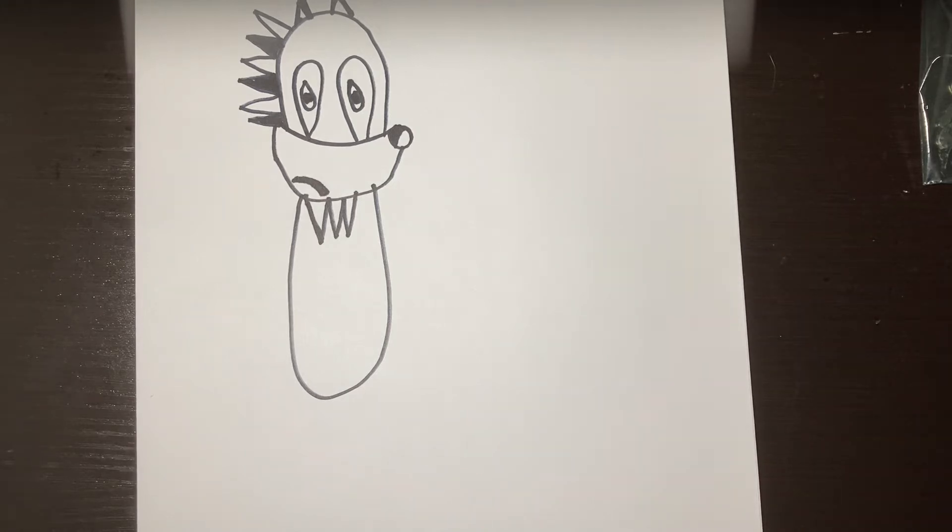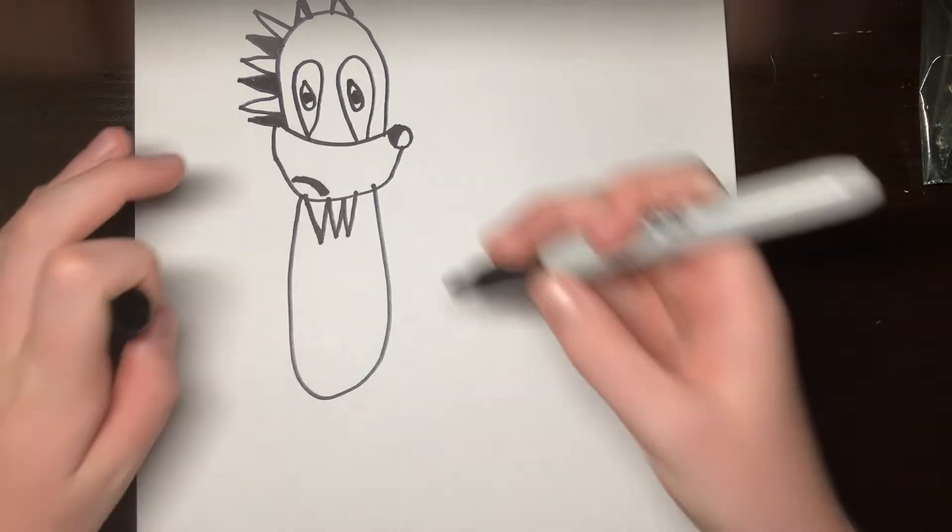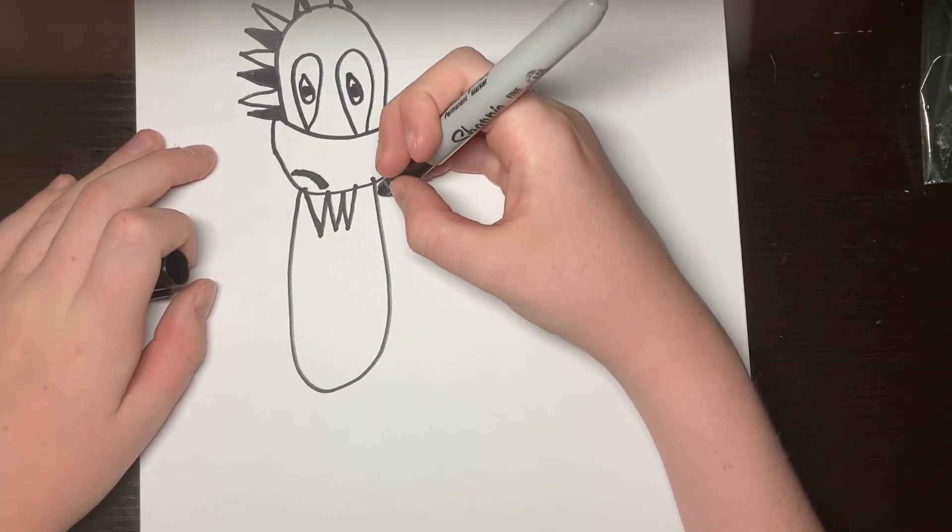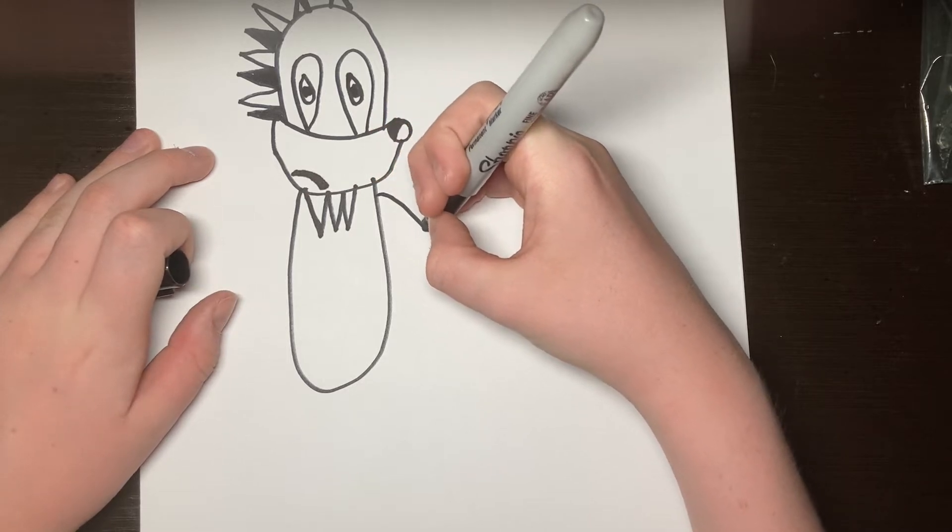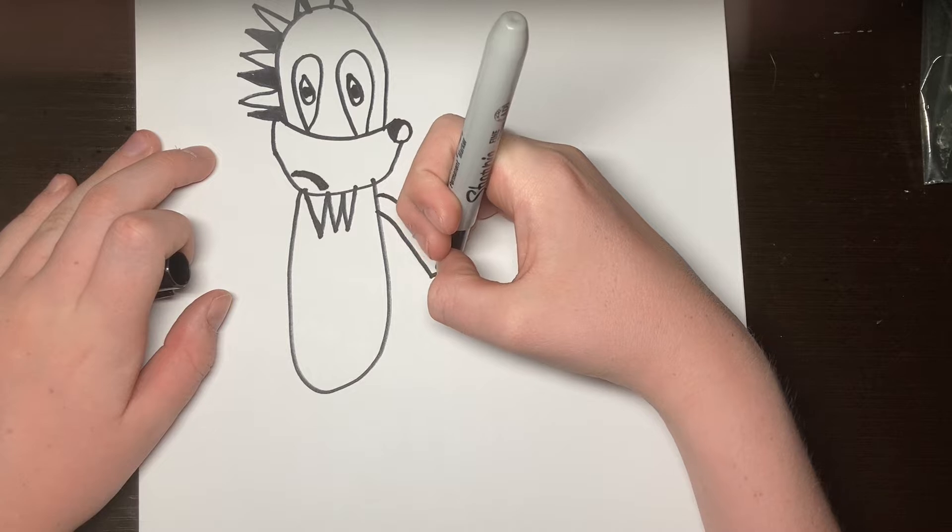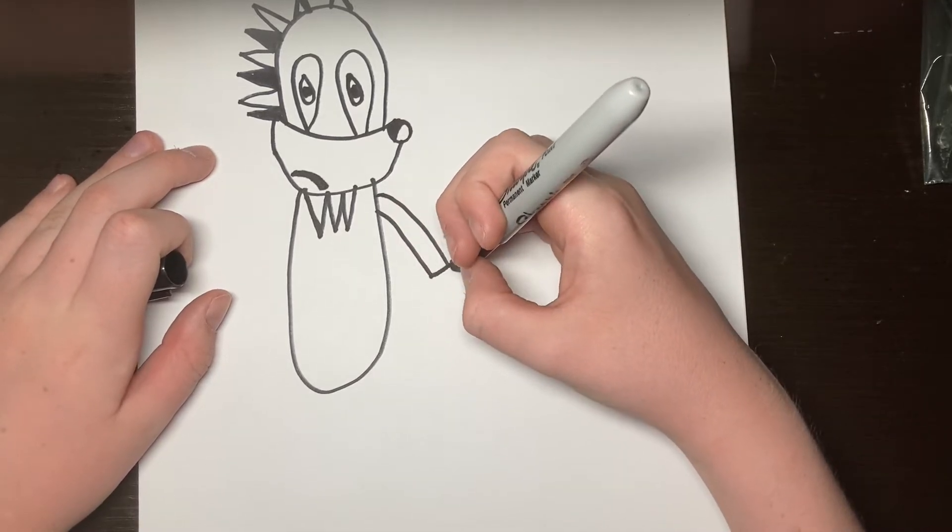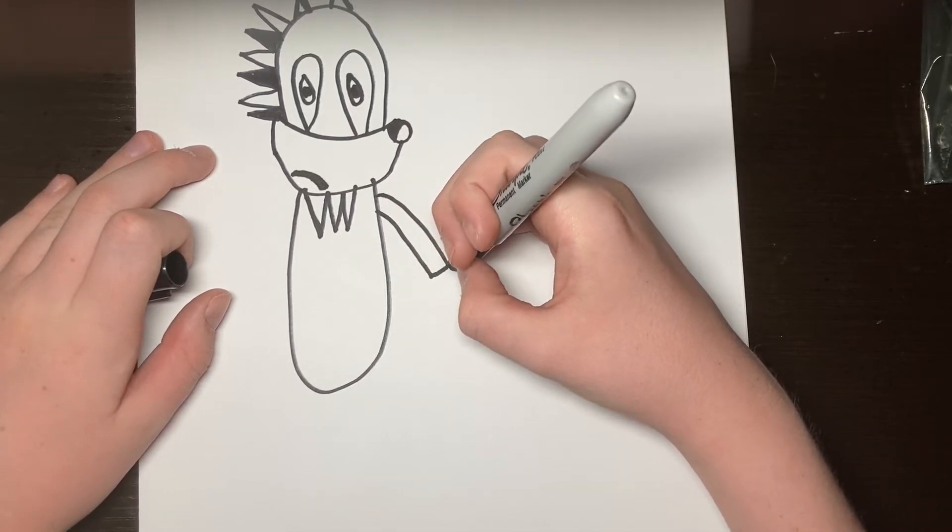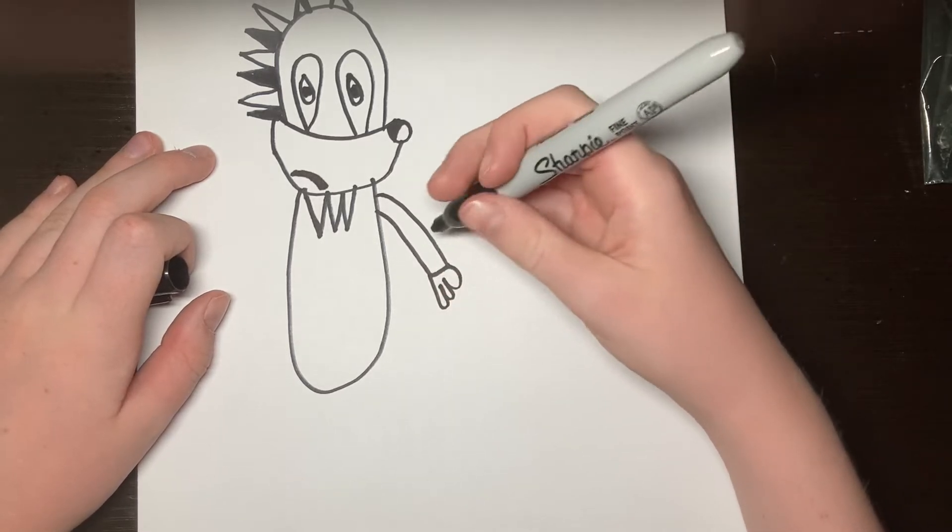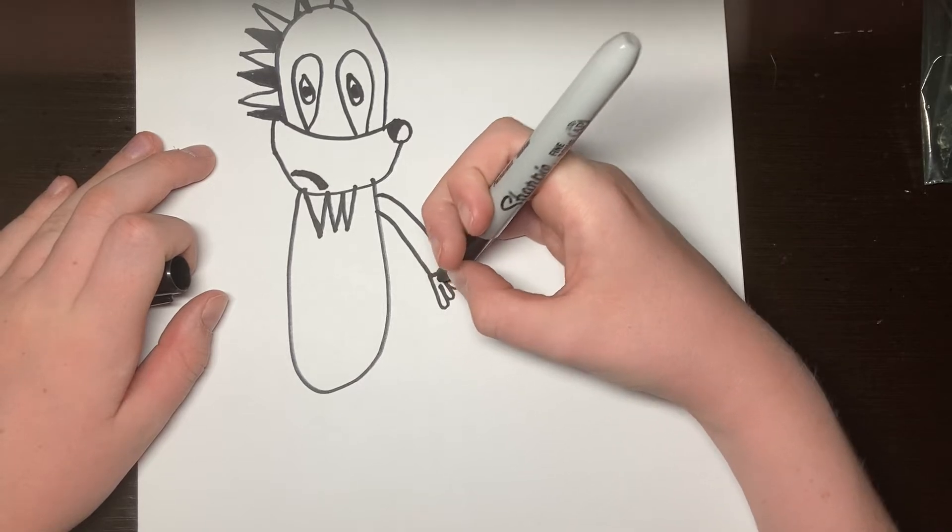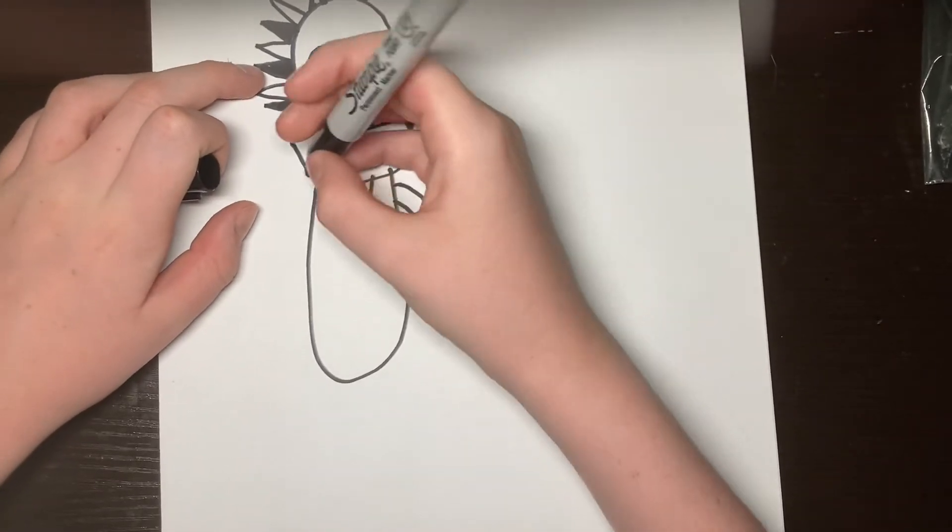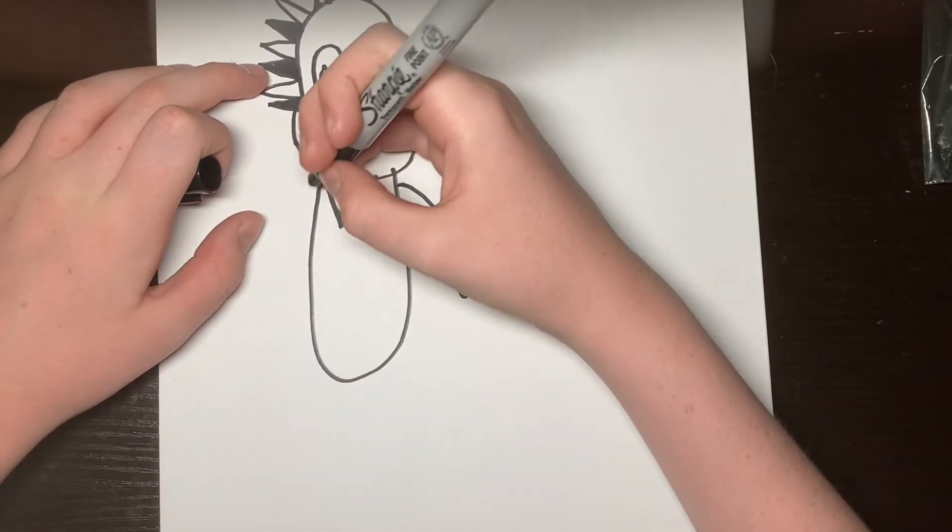We are going to make his arms. So first be like this. And then you go like this. I'm sorry that his hand looks like that. It's the best I can do. And then do the same thing on the other side.